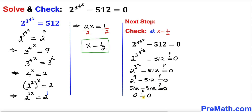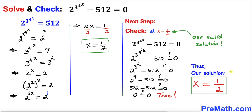We can see that this statement is indeed true, equal to 0. So we conclude that x equals to 1 over 2 is indeed our valid solution. Thus our solution is x equals to 1 over 2. Thanks for watching and please don't forget to subscribe to my channel for more exciting videos.